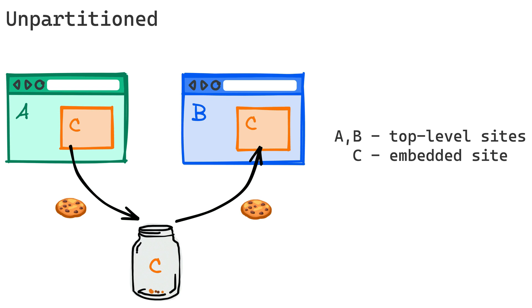Without cookie partitioning, a third-party service can use a cookie set in one top-level site across other top-level sites when the same service is embedded. As shown in this diagram, top-level sites A and B both embed site C. The cookies created by site C are stored in the same cookie jar irrespective of the top-level embedding context, making them accessible across both contexts A and B.